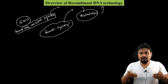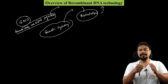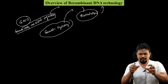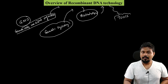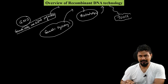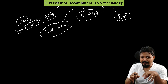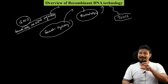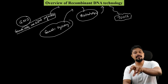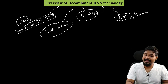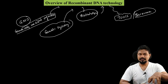Today we are starting Chapter 2, and first I want to give you an overview so that you can link all the concepts together. I will detail the steps and tools of recombinant DNA technology one by one. Just as cooking food requires ingredients and tools, recombinant DNA technology also requires specific tools and processes.